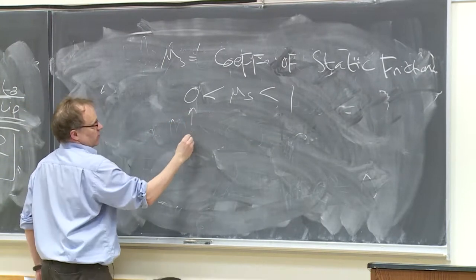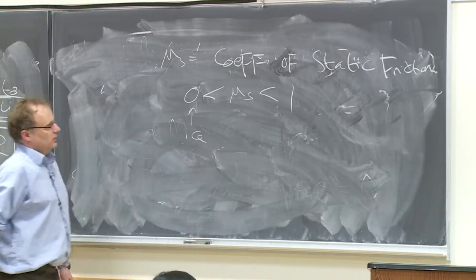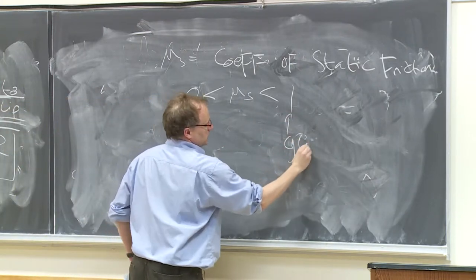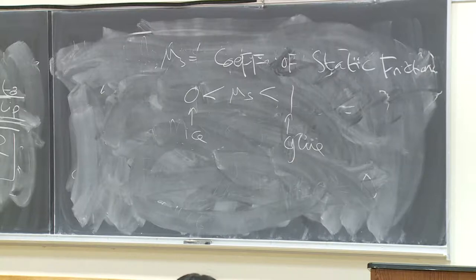Zero would be close to something like ice. One would be something like glue. The sandpaper is probably about a half, sandpaper bricks maybe a half.